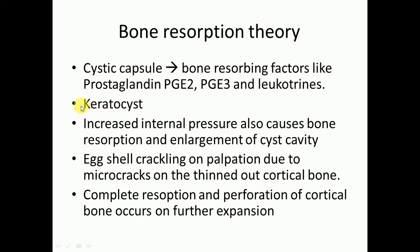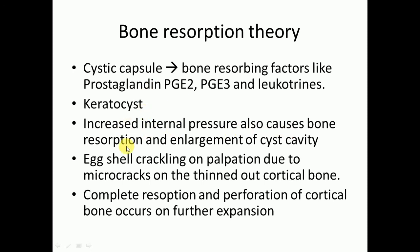A special thing about the keratocyst is that it contains less amount of prostaglandins E2, E3, and leukotrienes. That is why it doesn't lead to perforation of the cortex and instead spreads via the intramedullary pathway — the pathway of least resistance. Increased internal pressure also causes bone resorption and enlargement of the cyst cavity.